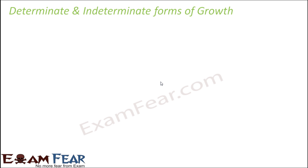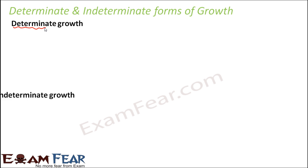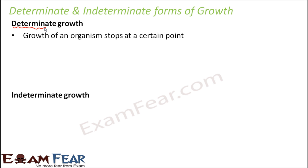Now we will talk about determinate and indeterminate forms of growth. Determinate growth is the one in which the growth of an organism stops at a certain point. So that means we know how much that particular organism will grow — it will grow only up to a certain point, and beyond that the growth will stop. That is called determinate growth.